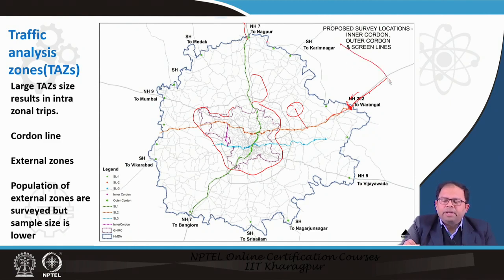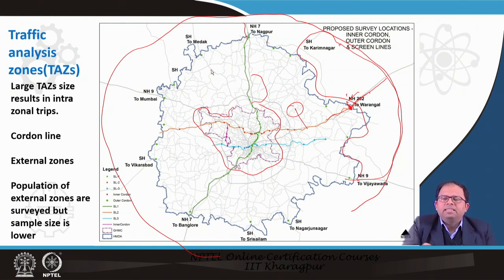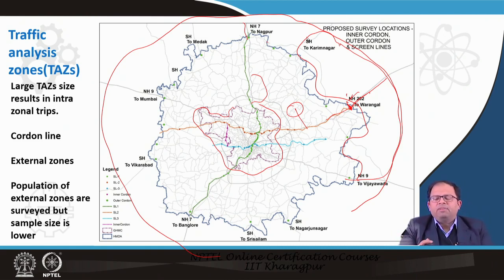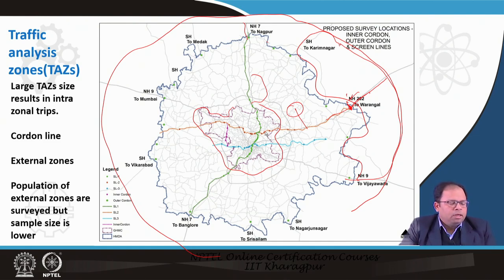When we have a cordon line, we can also have external zones. The surrounding area outside the planning boundary becomes an external zone. We can broadly say so many people are travelling from this external zone to different smaller zones inside the city. We limit the actual transportation plan to the defined area, with everything outside taken as external zones. These external zones can be divided into 4-5 zones corresponding to nearby highways. Population of external zones is also surveyed but with a much lower sample size compared to the inner city.